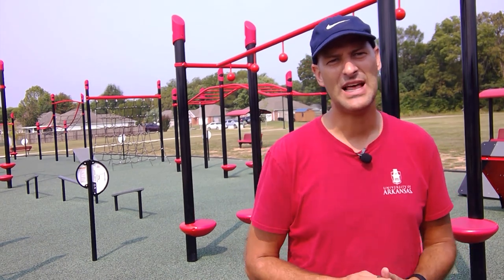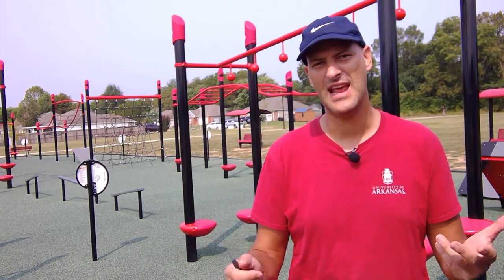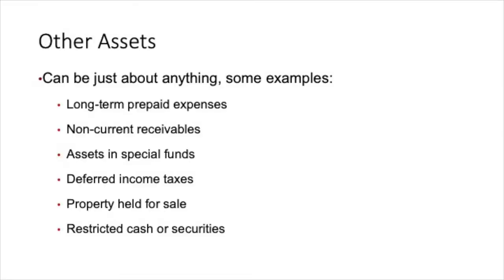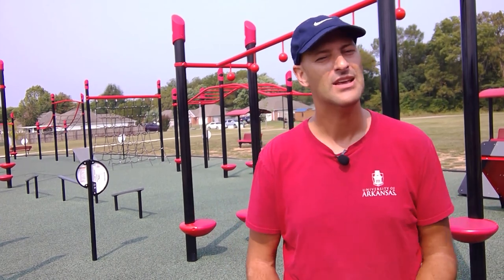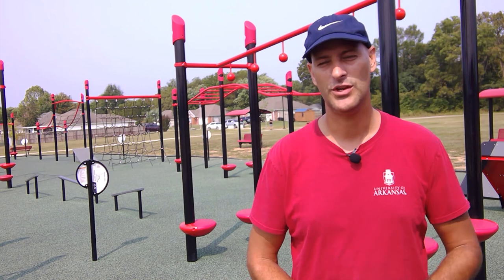Other assets is essentially a catch-all at the end. It can include long-term prepaid expenses, non-current receivables, assets in special funds, deferred income taxes, property held for sale, restricted cash or securities, or any number of other items. There's really no limit to what can go into other assets. If assets don't fall into a main category, they're listed here, and most companies just have a category labeled 'other assets' since no individual item is significant enough on its own.